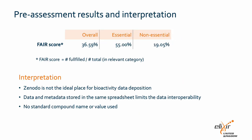The dataset pre-assessment indicated an overall FAIRness level of 37%, indicating low adherence to the FAIR guiding principles. Detailed pre-assessment results are available in the video description. Several potential reasons account for the reduced FAIRness level. Firstly, Zenodo is not the ideal place for bioactivity data deposition. Secondly, data and metadata being stored in the same spreadsheet limits the data interoperability. Thirdly, no standard compound name or value was used.